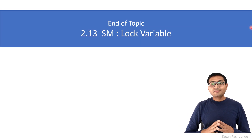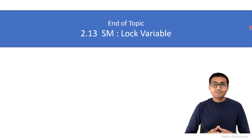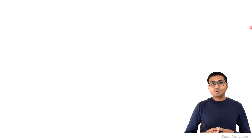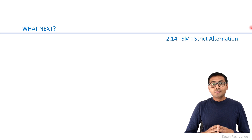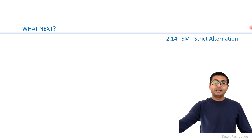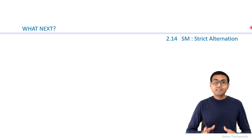That brings us to the end of this topic — the first synchronization mechanism, which is the lock variable. It is not a good solution. In the next session we are going to discuss the second synchronization mechanism, which is strict alternation. Thank you for watching, I hope that was useful. Feel free to send me any queries or comment below. See you in the next session.